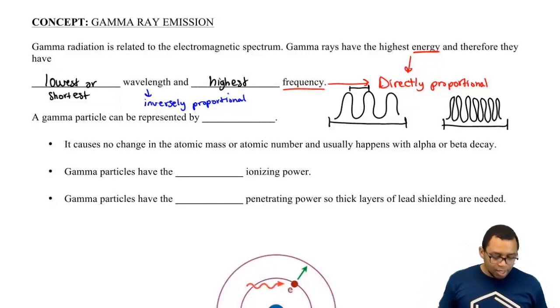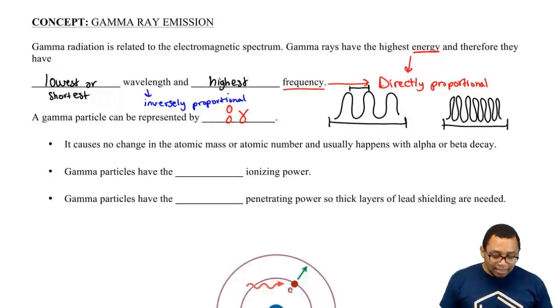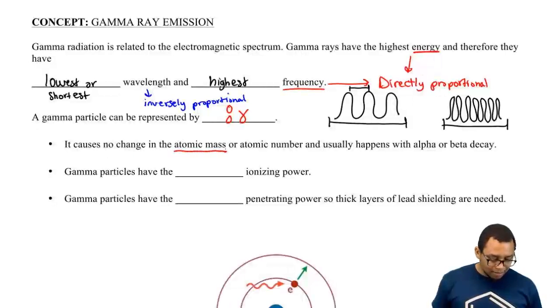A gamma particle can be represented by 0 over 0 with the gamma symbol. Because it's 0 over 0, a gamma ray does not cause any change in atomic mass or atomic number.